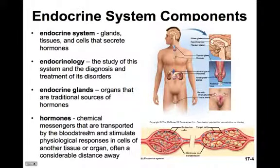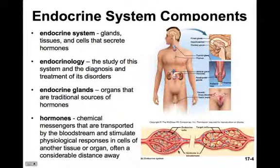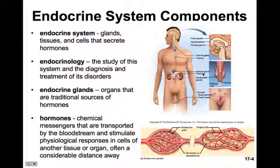The endocrine system is composed of glands, tissues, and cells that secrete hormones. The study of this system and the diagnosis and treatment of its disorders is called endocrinology. The traditional sources of hormones are the endocrine glands, and hormones are chemical messengers transported in the bloodstream that stimulate physiological responses in cells of another tissue or organ, often a considerable distance away. This figure on the right shows you the various endocrine glands, which we'll explore in more detail throughout this chapter.